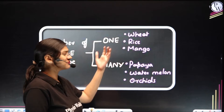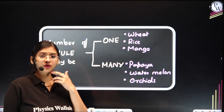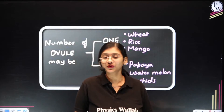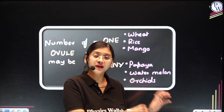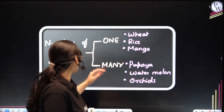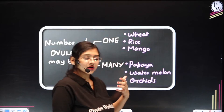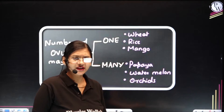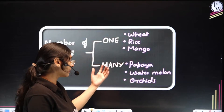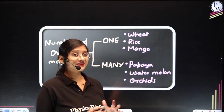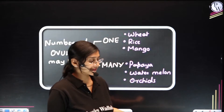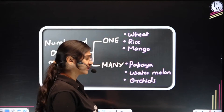It's very simple to remember — you can actually use your experience. If you remember eating mango, you can see just one seed in one mango, so that's how this example works. And coming to many ovules, which means those ovules will give rise to many seeds. So when we eat papaya or watermelon, we get to see many seeds in a fruit — so they would be having many ovules. Another example is orchids.